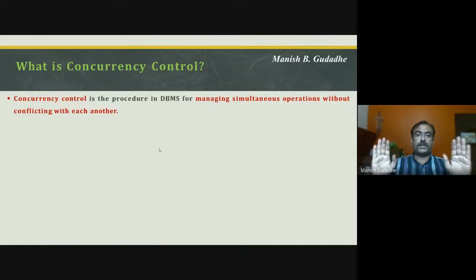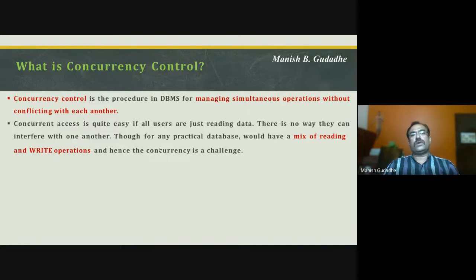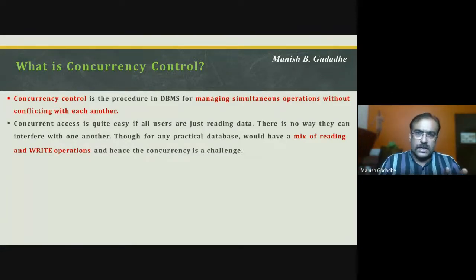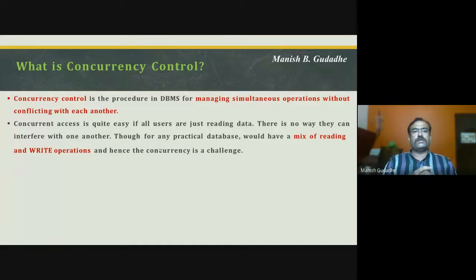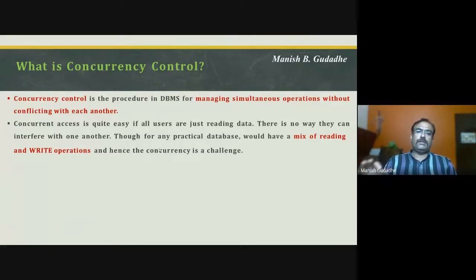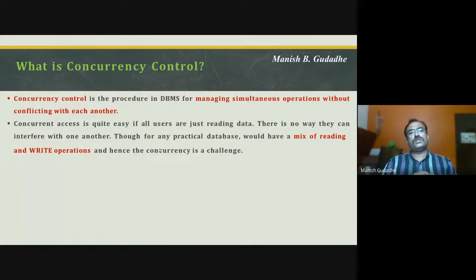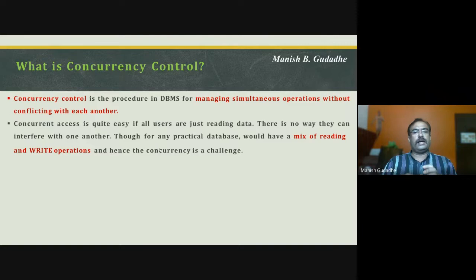When you are accessing news or informative items and just reading, there will be no conflict and no delay. But whenever you are trying to submit a form or write something, delay will happen because it needs to take care of other requests. Concurrent access is easy with read-only operations, but for any practical database we have a mix of reading and write operations, and hence concurrency issues arise.